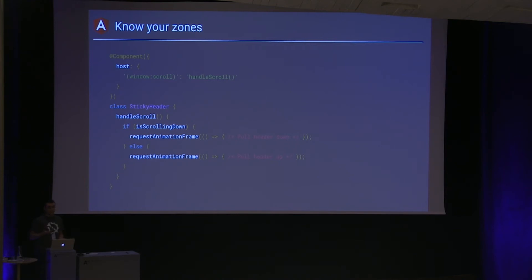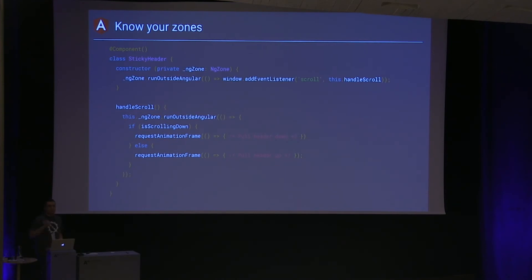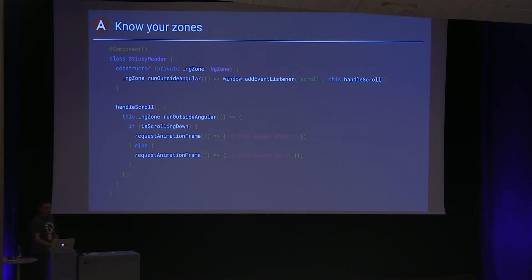To avoid this, instead of binding through Angular's binding mechanisms, you can bind the event yourself, wrapping it in a runOutsideAngular call. You inject the NgZone and wrap your code, which ensures you won't trigger change detection. The same goes for animations — whenever you start your animation, you should run it outside the zone.